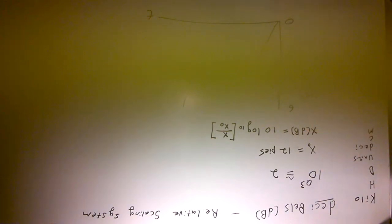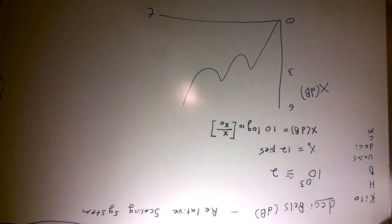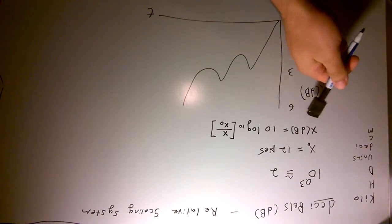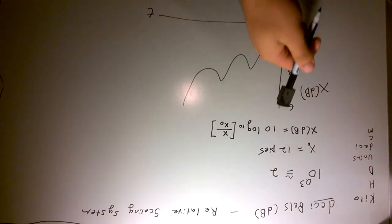This is an important part of how decibels work. Like we just said, decibels is a relative scaling system, so the first thing you need to do is pick some naught value. In this case, we'll say x naught is equal to 12 pies. Now let's say x in decibels is equal to...